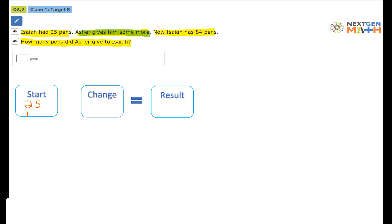Isaiah has 25 pins. Asher gives him some more pins. We don't know how many, but now Isaiah has 84 pins.